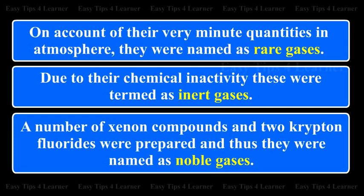On account of their very minor quantities in the atmosphere, they were named as rare gases. Due to their chemical inactivity, these were named as inert gases. A number of xenon compounds and two krypton fluorides were prepared, and thus they were named as noble gases.